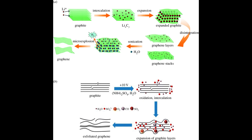Electrochemical exfoliation. In this method, an electric potential is applied to a graphite electrode submerged in an electrolyte solution. This leads to the exfoliation of graphene layers from the bulk material.